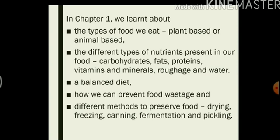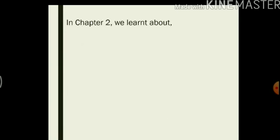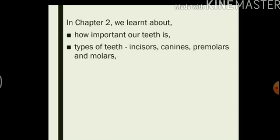Some examples are drying, freezing, canning, fermentation and pickling. In chapter 2, the teeth, we read about how important our teeth are. The different types of teeth, that is incisors, canines, premolars and molars.